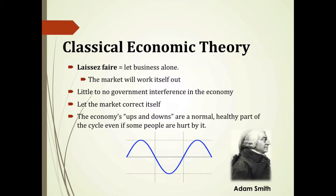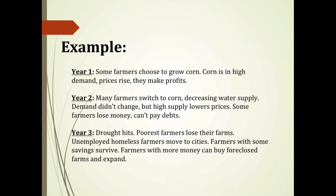Let's take a closer look at how classical economic theory and laissez-faire policy applies to farmers. In year one, some farmers choose to grow corn. Corn is in high demand, so prices rise naturally and farmers make more profits. In year two, many other farmers begin to switch to growing corn, causing a decrease in the water supply. Consumer demand did not change, but the high supply of corn now on the market will lower prices naturally. Consequently, some farmers will lose money, cannot pay their debts, and the market is failing some producers, creating both winners and losers.